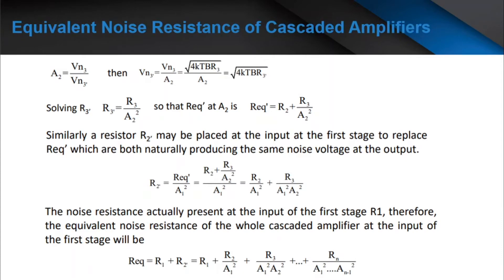Now, in this slide, we can see how to solve the equivalent noise resistance of a cascaded amplifier. From A2 = VN3 / VN3'', we can derive this formula. So VN3' is equal to VN3 over A2. And VN3 is equal to the square root of 4KTB·R3, so VN3' equals the square root of 4KTB·R3'. Solving for R3', it will be equal to R3 over A2 squared.